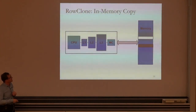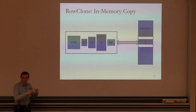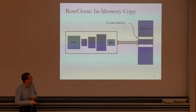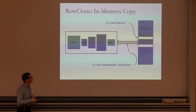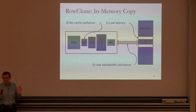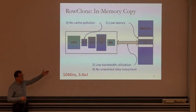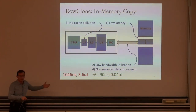In today's systems, you can eliminate cache pollution by doing a direct memory access through the memory controller without disturbing the caches, though there is overhead to setting up the DMA. If you do this copy via DMA for a 4 KB page with the technology assumptions in the paper, it takes about 1,046 nanoseconds and consumes 3.6 microjoules of energy. The novelty of this paper is to propose a new mechanism to do this copy in memory without going through the processor at all — the idea is very simple.